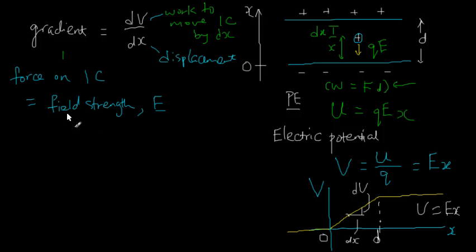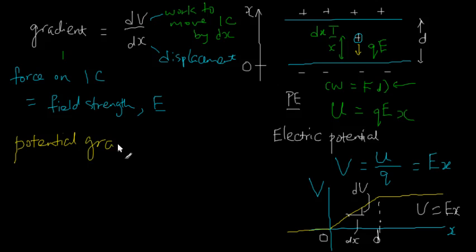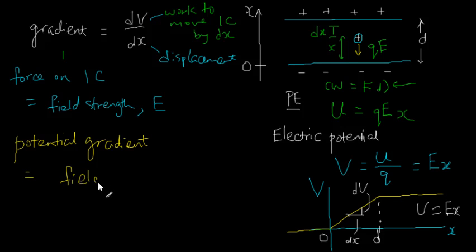I'm going to introduce a standard term for this gradient to make it easier to describe. Instead of calling it the gradient of the electric potential graph all the time, I'm just going to call it the potential gradient. By that, we mean the gradient of the potential graph. The potential gradient is equal to the field strength.